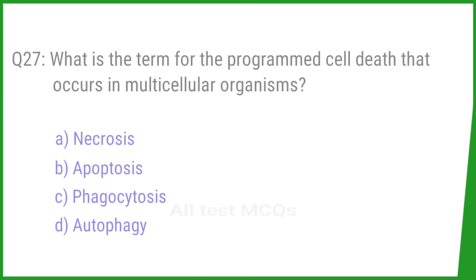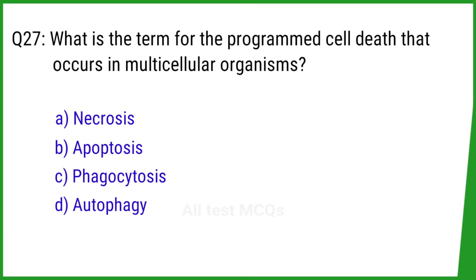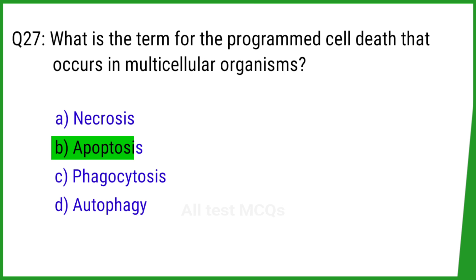Question number 27. What is the term for the programmed cell death that occurs in multicellular organisms? The right answer is option B: Apoptosis.